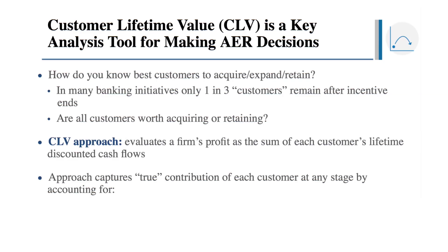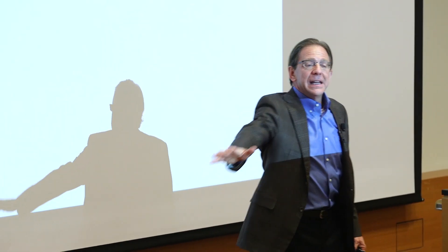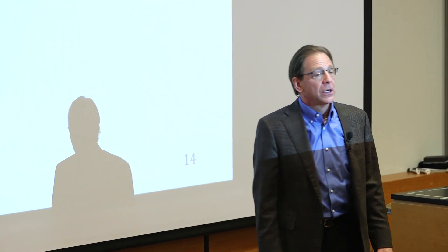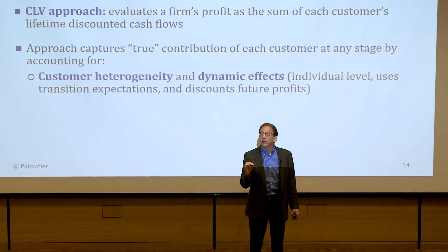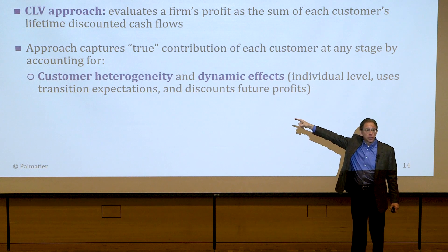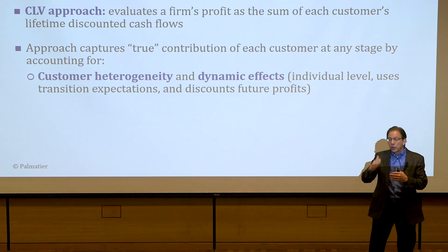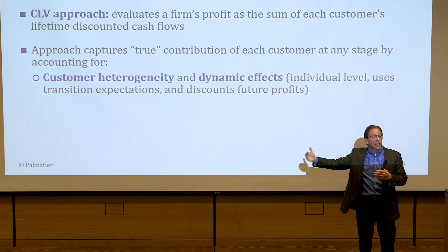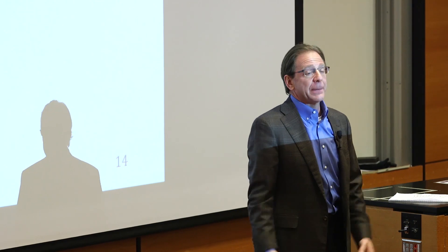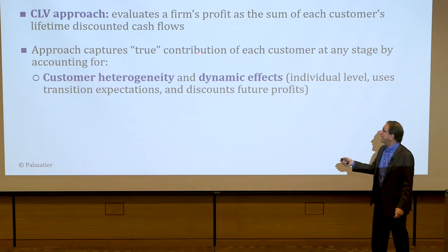CLV evaluates the firm's profits as a cash flow and allows true contribution analysis. One key benefit: it allows you to capture market principles one and two simultaneously. It manages customer heterogeneity — if every customer in your portfolio has a CLV attached, like Royal Bank of Canada does, you capture individual customer heterogeneity and deal with the fact that all customers differ. Second, it takes into account dynamic effects — by going through the expected migration pattern and how long the customer will stay, you account for the customer's dynamic path, pulling all of that into one number: customer lifetime value.